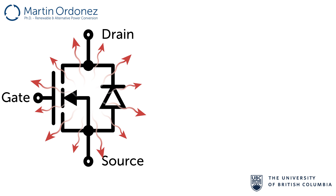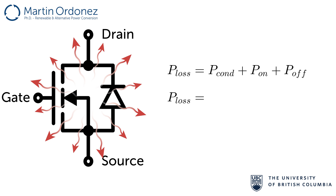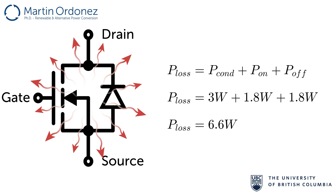Therefore, the total power being dissipated by this MOSFET operating under these conditions is 3 watts from conduction, plus 1.8 watts from turn-on, plus 1.8 watts from turn-off, which results in 6.6 watts of total losses.